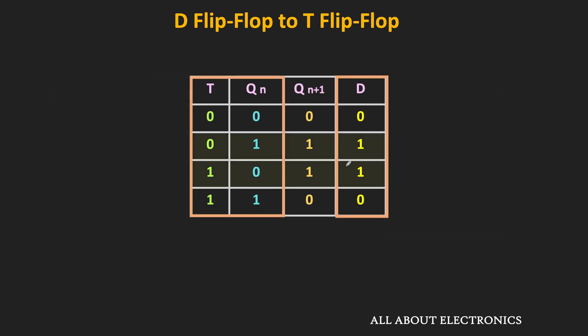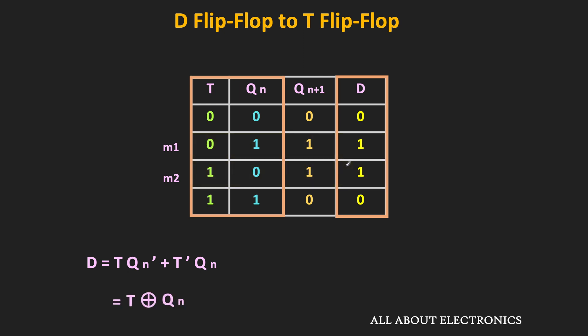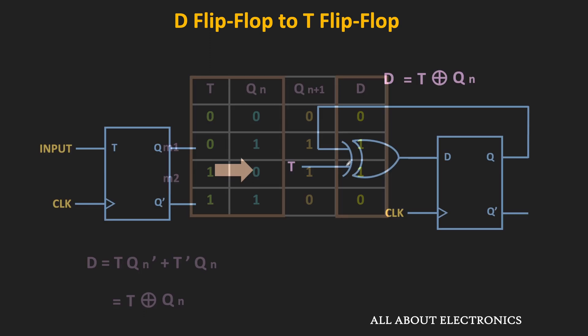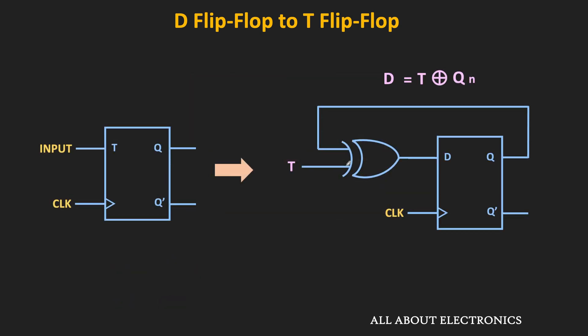If you notice, the D input is 1 for two different input combinations: 01 and 10. The corresponding min terms are M1 and M2. So we can say that D is equal to T̄·Qn plus T·Q̄n, or equivalently D is equal to T XOR Qn. That means, simply using one XOR gate, we can convert the D flip-flop into the T flip-flop.